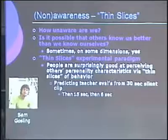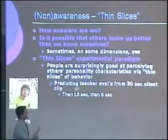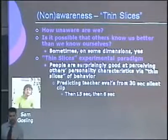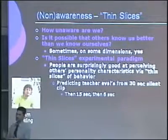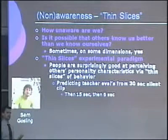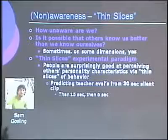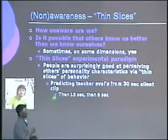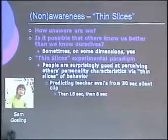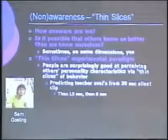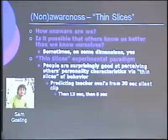They then reduced it to 15 seconds, and people could still predict what evaluations a professor's own students would give four months later. Then they reduced it to just six seconds, and they were still able to predict end-of-year teaching evaluations. This is a strange finding — what do you think about this? A student asks how the clips were chosen, noting that cherry-picking bad clips from bad teachers and good clips from good teachers would create the result. The answer is that the clips were chosen randomly, though the exact methods aren't recalled precisely.